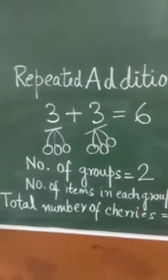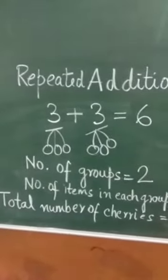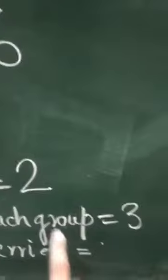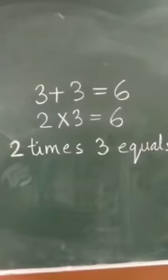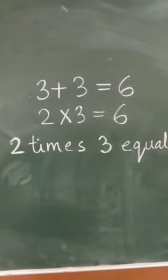So if we have to find out total number of cherries, what will we do? We will multiply these two numbers, 2 and 3. So the product of 2 and 3 is 6. So now we can say that 2 multiplied by 3 equals to 6.